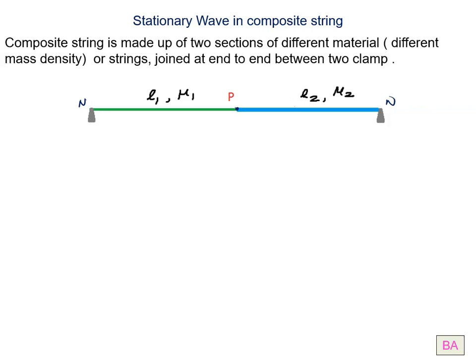Again I am repeating. Both the ends are known as nodes because here the string is clamped, and this point P, where the strings are connected, can be node, can be anti-node.